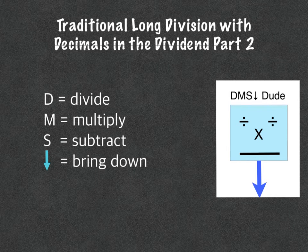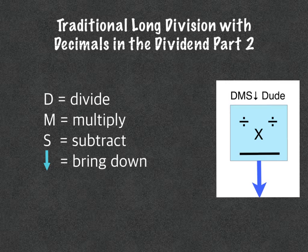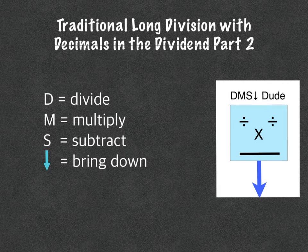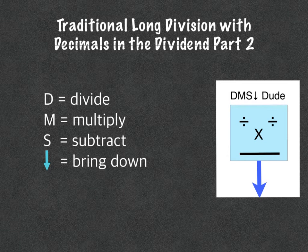We are going to do a traditional algorithm long division with decimals in the dividend, and this is part two. In part one, we talked about what happens when you divide numbers with decimals in the dividend, but it does end at the last digit of your dividend. In this case, what we're going to do is actually go beyond the numbers in our dividend. We are still going to use the strategies we used before.